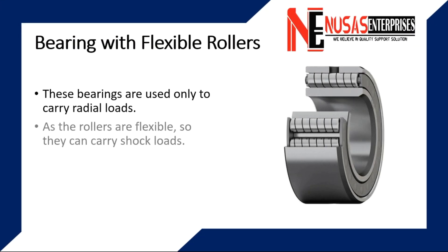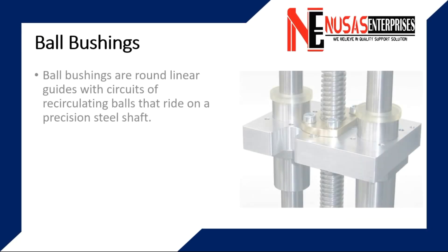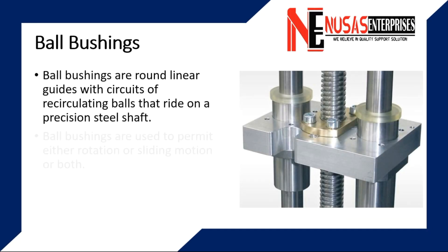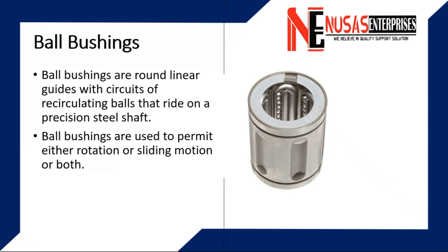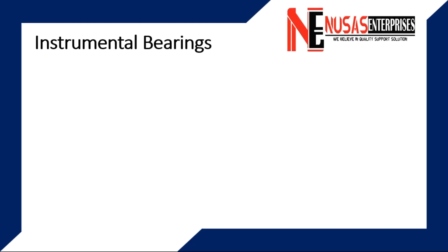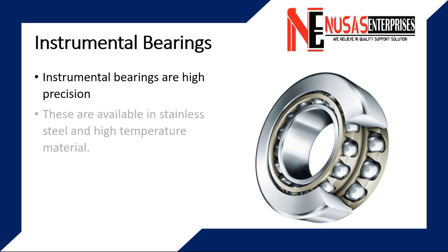Bearings with flexible rollers are used only to carry radial loads. As the rollers are flexible, they can carry shock loads. Ball bushings are used to permit either rotation or sliding motion or both. Instrumental bearings are high precision and are available in stainless steel and high temperature material.